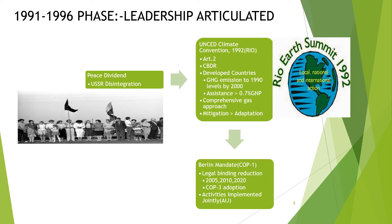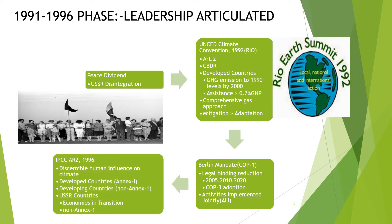Activities Implemented Jointly was set up — a mechanism in which countries could voluntarily participate in greenhouse gas emission reductions in other countries, though they would not receive any emission credit for that. The IPCC released another report stating there was a discernible human influence on climate. Countries were divided into Annex 1 — which were OECD countries — and non-Annex 1 countries. After the USSR dissolution, the smaller states were categorized as economies in transition and moved into Annex 1, while other countries moved into non-Annex 1.